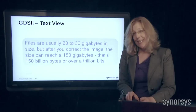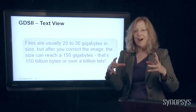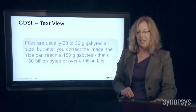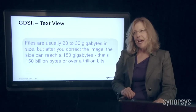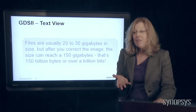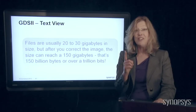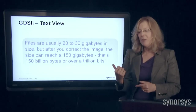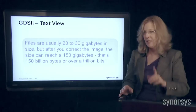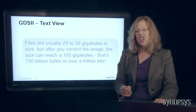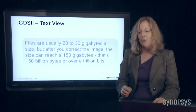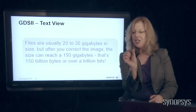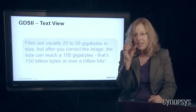This is kind of amazing. Today's chips right now — the file size that describes the physical implementation can be 20 to 30 gigabytes in size. The laptop I have right now might barely be able to hold one chip design. That is a huge amount of data. But in the next step, which we call correcting the image, because we've got some problems to solve still, the size of the file can reach 150 gigabytes of data — which is 150 billion bytes, or a trillion bits of data. This is massive amounts of data just to represent the physical layout and placement of that chip.